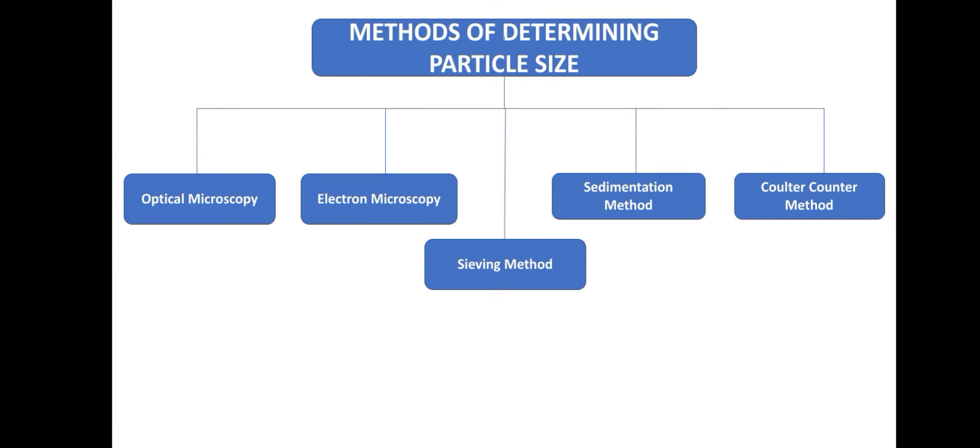Now here are some of the methods which are used for determining the particle size. They are given below: First one is optical microscopy, second is electron microscopy, third is sieving method, fourth is sedimentation method, fifth is Coulter counter method.